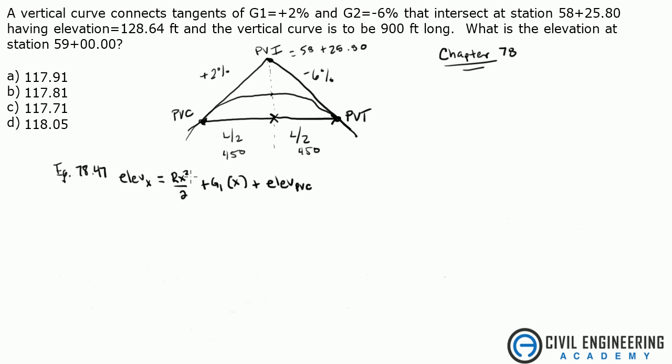So we know the only thing we know here is G1. We don't know anything else, we need to solve for it. The first thing I'm going to do is solve for what R is. That comes from equation 78.46 in the Civil Engineering Reference Manual. That states that R is G2 minus G1 divided by L. Plugging this in, we have -6 minus 2 divided by length. Length I'm going to leave in stations, 9 stations. You have to remember we're going to be working all in stations here. That gives me -8 over 9, which is -0.889% per station.